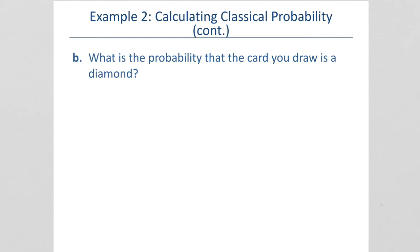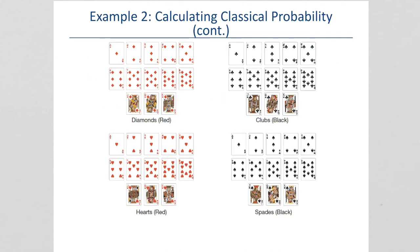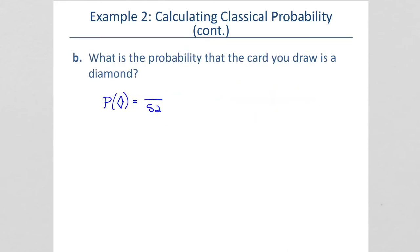What is the probability that the card you draw is a diamond? So, we need to look and see how many diamonds there are. If we count them up, there are 13. And, that reduces to one-fourth. Or, as a decimal, 0.25.